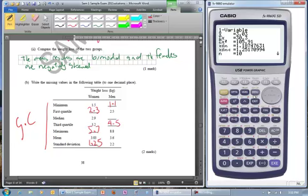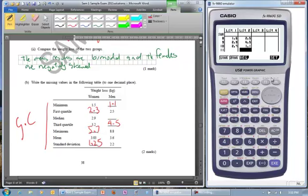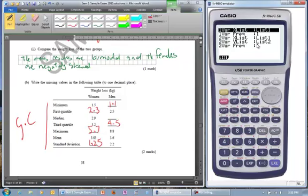Now for the men we can do the same thing. We go set, we need to change these to list 2, then go exit and check it again. Now we have got 3.55 as our mean.